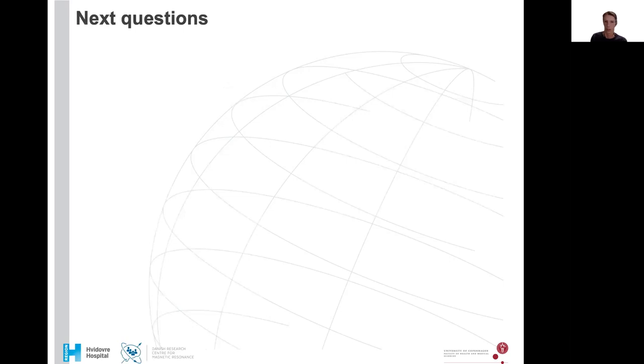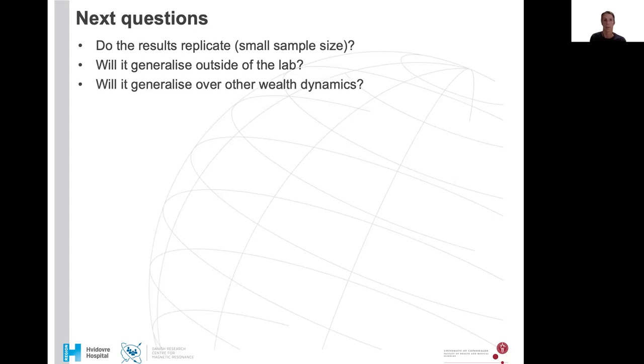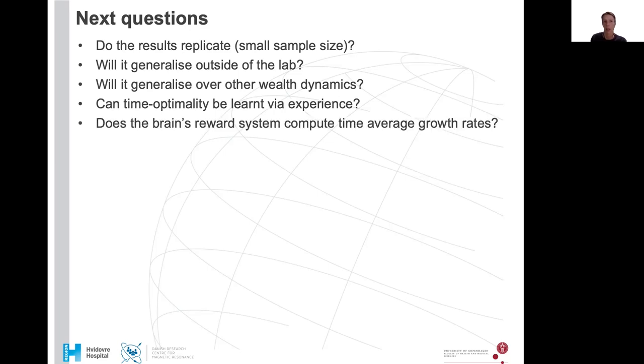So these results led to some new questions. For example, do the results replicate? We only tested this in 18 participants. Will it generalize outside of the lab? Will it generalize over other wealth dynamics? Can time optimality be learned via experience and, of interest for us at the neuroscience center, does the brain's reward system compute time average growth rates?